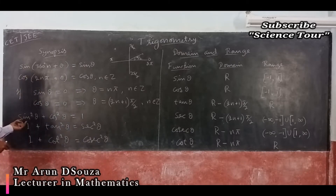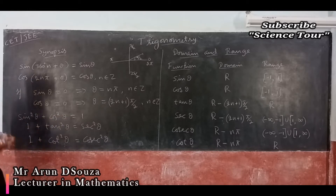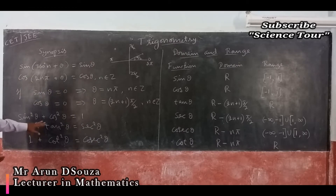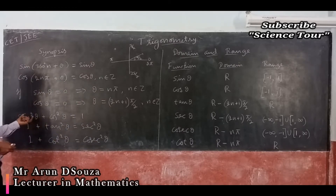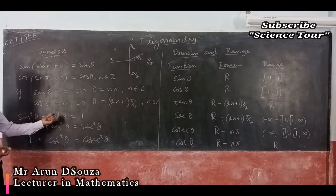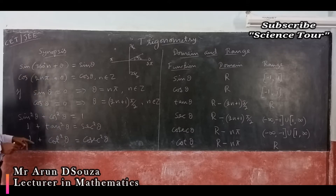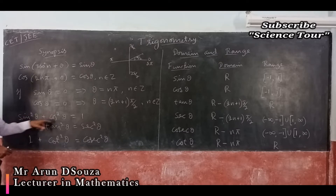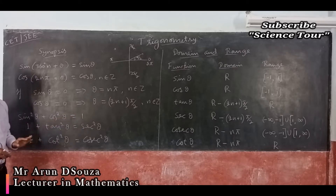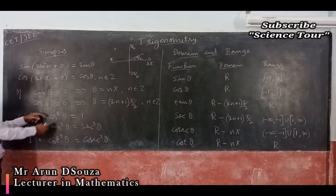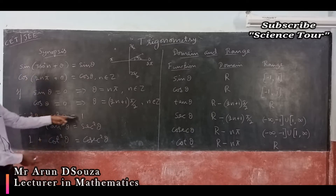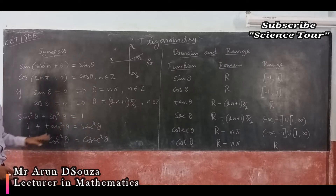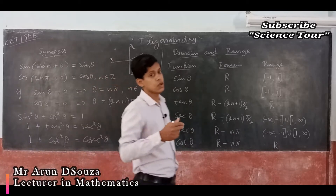Next, we have 3 Pythagorean identities. The basic one is sin²θ + cos²θ = 1. The other two are derived from it. If you divide by cos²θ, you get tan²θ + 1 = sec²θ. If you divide by sin²θ, you get 1 + cot²θ = cosec²θ. So if you remember the first, you can get the other two.